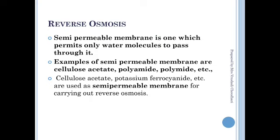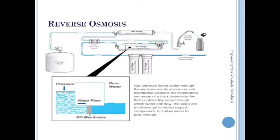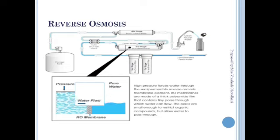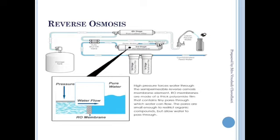Examples of semi-permeable membranes used in reverse osmosis include cellulose acetate, polyamide, and other polymer types. Potassium ferrocyanide is also used as a semi-permeable membrane. In the general diagram for reverse osmosis, high-pressure pumps are used to force the water through the semi-permeable membrane.